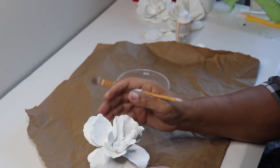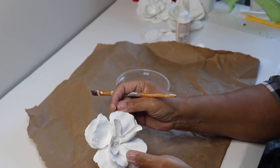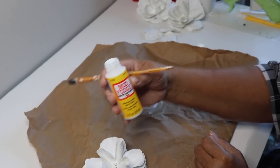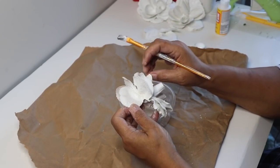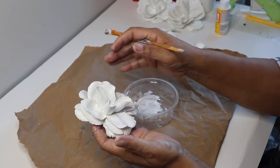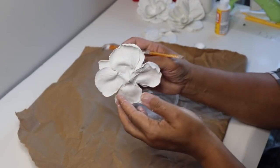Now that my flowers are dry, I'm going to coat the bottom and the top petals with this matte finish Mod Podge. I separated the flower petals and then put all three flowers aside to dry.